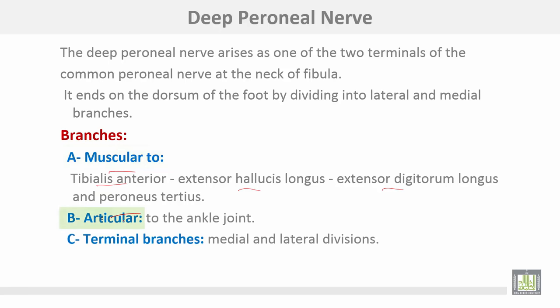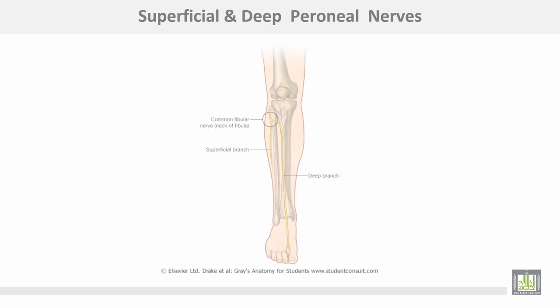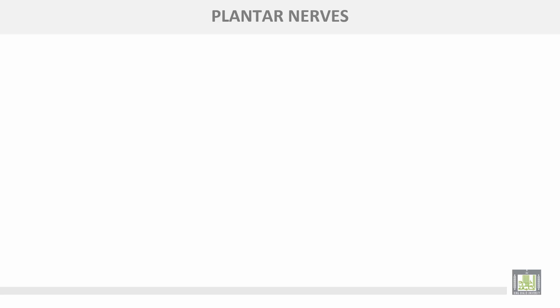Articular branches of the deep peroneal nerve go to the ankle joint. Terminal branches are the medial and lateral divisions. The superficial and deep peroneal nerves are shown here as branches of the common peroneal, passing around the neck of the fibula.